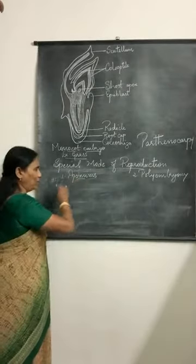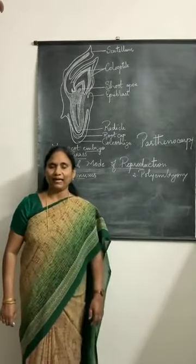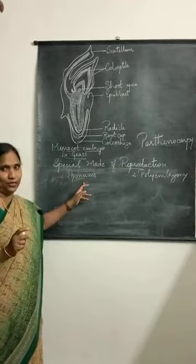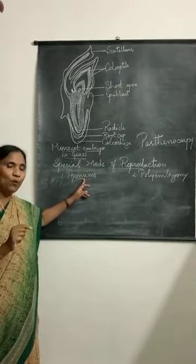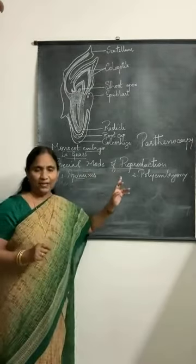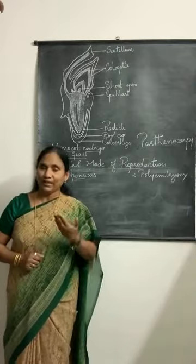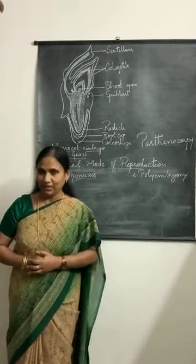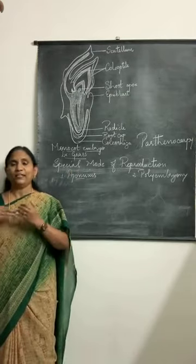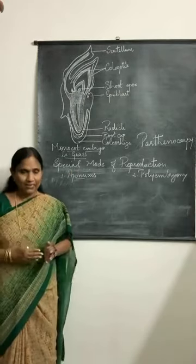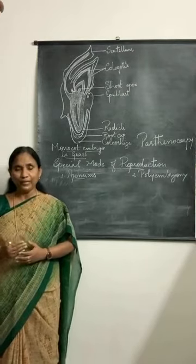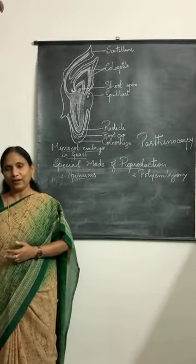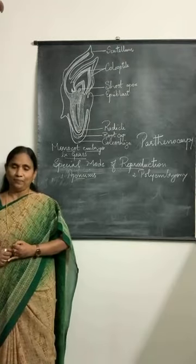What is meant by apomixis? Apomixis can be defined as a type of asexual reproduction — it is not sexual reproduction. Apomixis is a mode of asexual reproduction in which a new individual or seed is formed without the formation of gametes and their fusion. This is called apomixis.